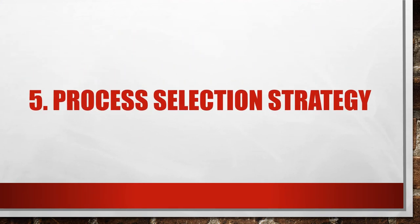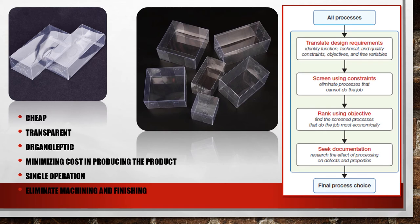Chapter 5: Process Selection Strategy. Transparent PVC films for small product packaging are designed to be cheap, transparent, and organoleptic. The key to minimizing process costs is to produce the PVC films to their final shape in a single operation. This means selecting a single process that can meet the specifications for precision and tolerance, avoiding the need for machining or finishing of the PVC film. By using the flow chart of the process selection procedure, we can determine the final process choice.